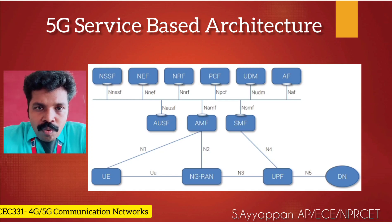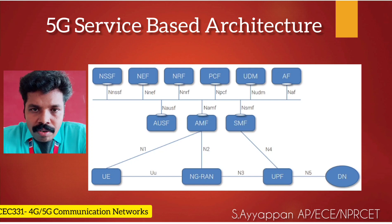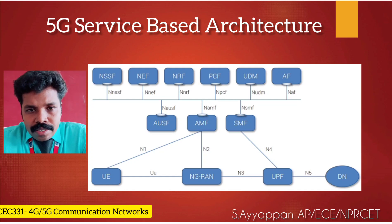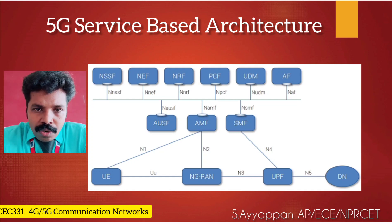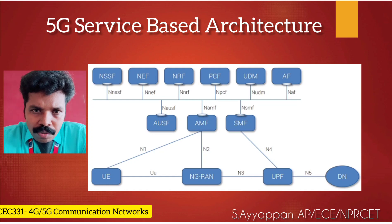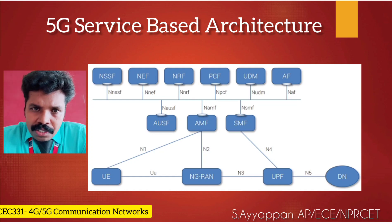In this picture, what you see is a lot of boxes written with names like AMF, SMF, UDM, and AUSF. All these network elements were typically purpose-built hardware and software boxes in the previous generation of networks. However, in the next generation of networks, all these network boxes are created as virtual network functions by using virtualization and containerization.